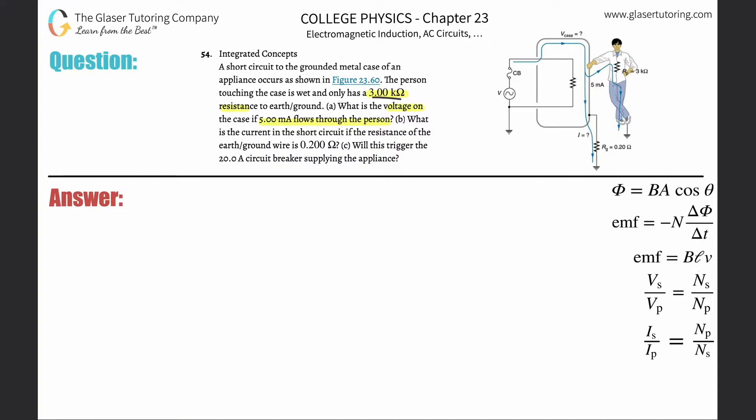We know the resistance of the person and we know the current that flows through the person. In other words, if we look at Ohm's law, we can find the voltage across a particular item, in this case the person, if we know the current flowing through the person and the resistance of the person. So we can actually calculate the voltage through the person.